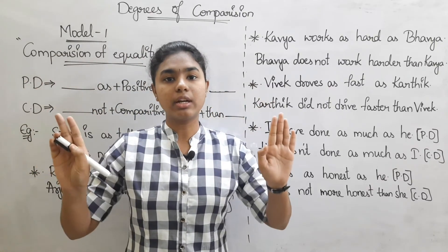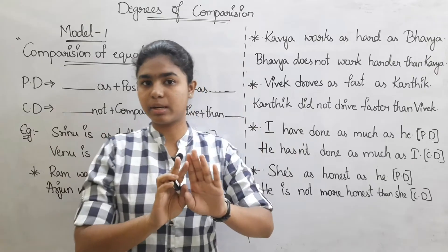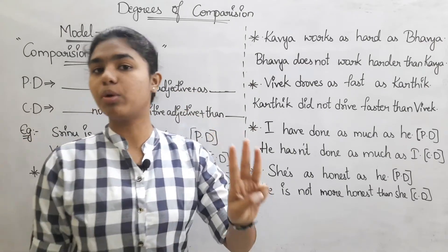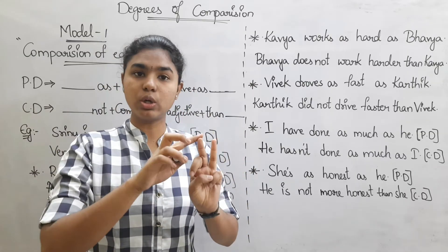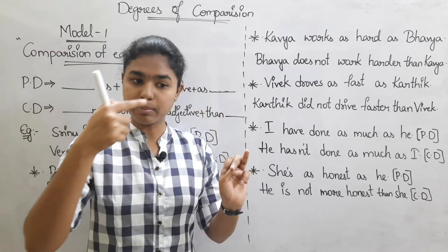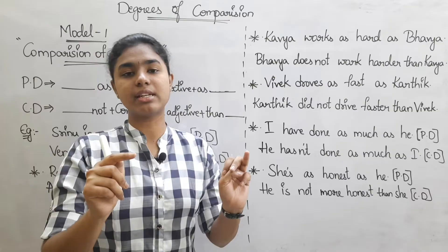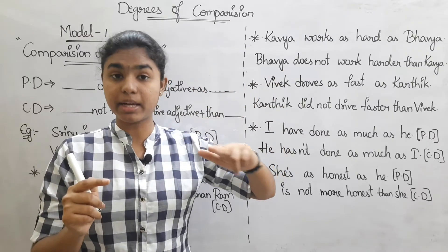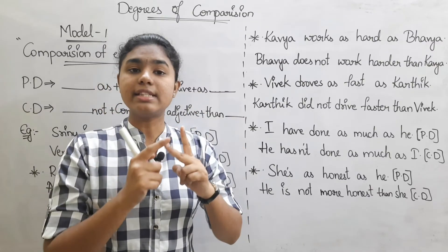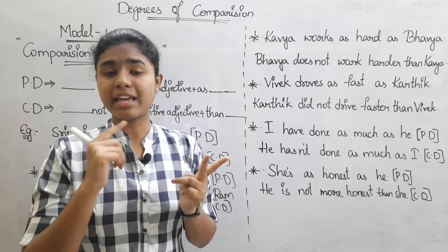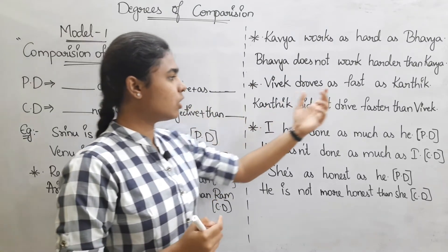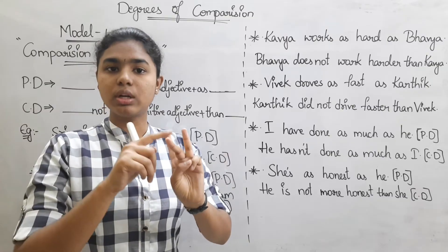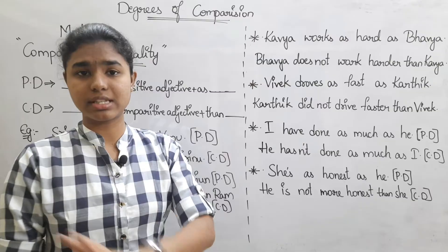What is the first thing? When we transform a sentence, the tense is always the same. Number two: the meaning is always the same. Number three: content words — that means main words — are also always the same. We will check these three things.